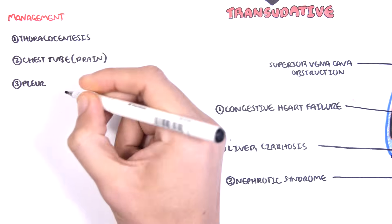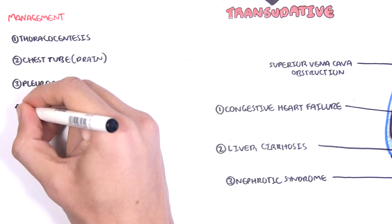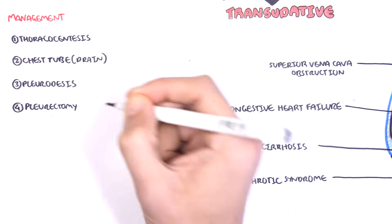Pleural adhesives can also be used if pleural fluid continues to build up within the pleural space despite the chest drain being used, useful in conditions such as cancer where fluid is continuously formed. Pleural adhesives is a procedure where doxycycline or talcum powder are put within the pleural space to obliterate the pleural space and prevent recurrent pleural effusions or even pneumothorax. Pleurectomy is a surgical option which removes the pleura altogether.